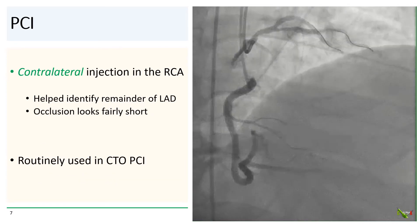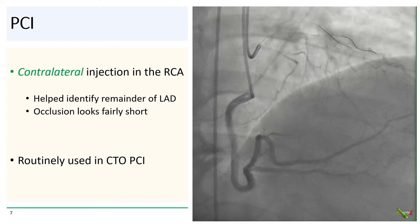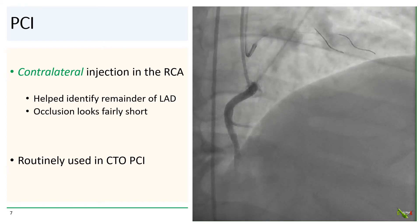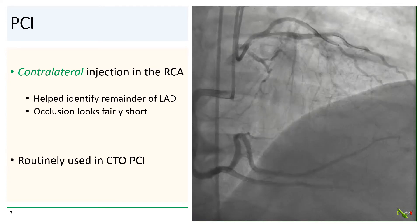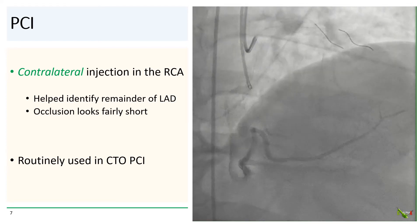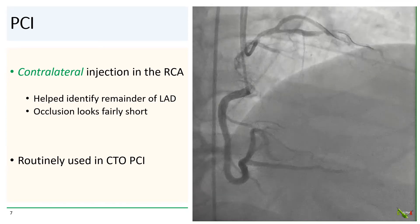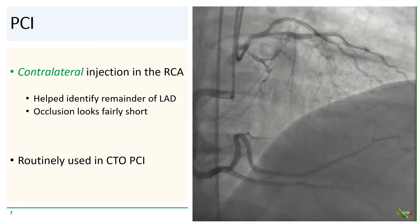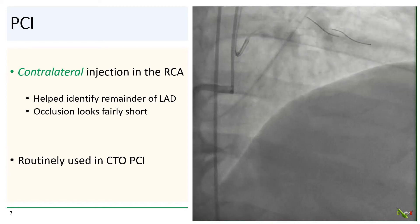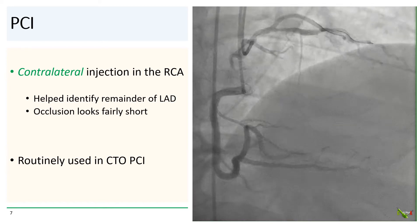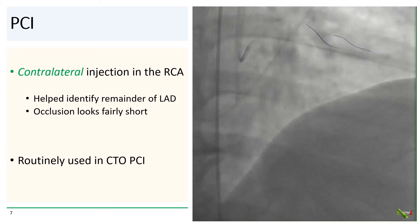In situations where there are collaterals, contrast injection in the contralateral vessel is often useful to locate where the occlusion is. So we went ahead and obtained femoral access and injected the RCA. This helped localize the remainder of the LAD, and the occlusion itself actually looked relatively short. Contralateral injections are routinely, if not universally, used in CTO-PCI.